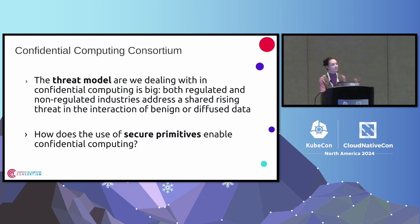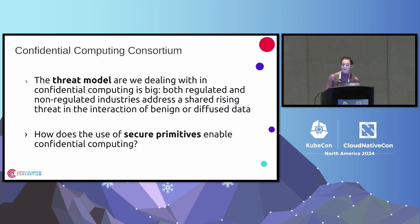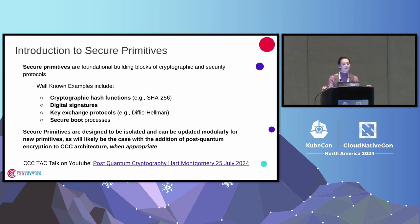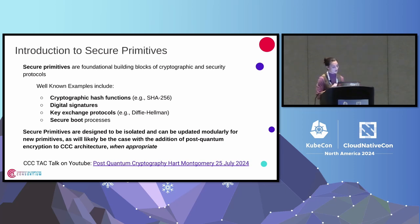The threat model that we are dealing with in confidential computing is very big. Both regulated and non-regulated industries address a shared rising threat in the interaction of benign or diffused data. Secure primitives are foundational building blocks of cryptographic and security protocols. These are some of the most well-known examples, and they are designed to be isolated and can be updated modularly. I reached out to Hart Montgomery from the post-quantum area of the Linux Foundation, and they came to talk to us about exactly what they're doing and how that will interact with us, because as we need to switch out different primitives, we need to be aware of that interoperability.